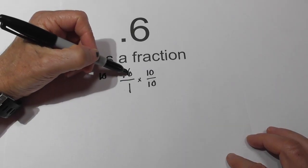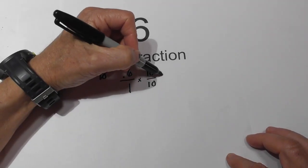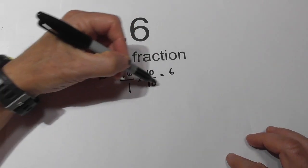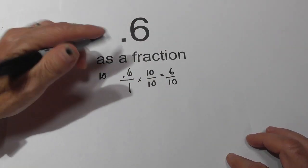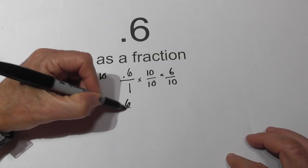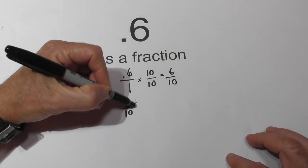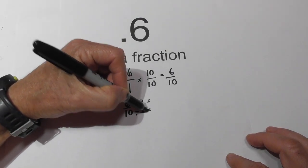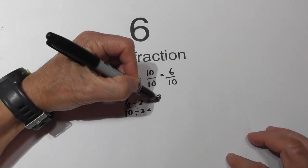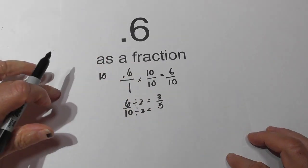So now what we do is .6 times 10 equals 6. 1 times 10 is 10. And now we can reduce that so we can divide 6 over 10 divided by 2 the numerator and the denominator and so that becomes 3 fifths.